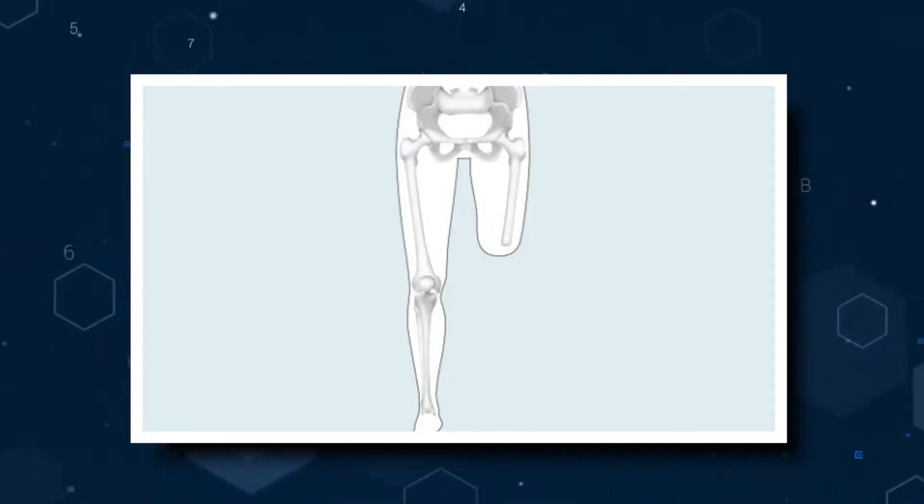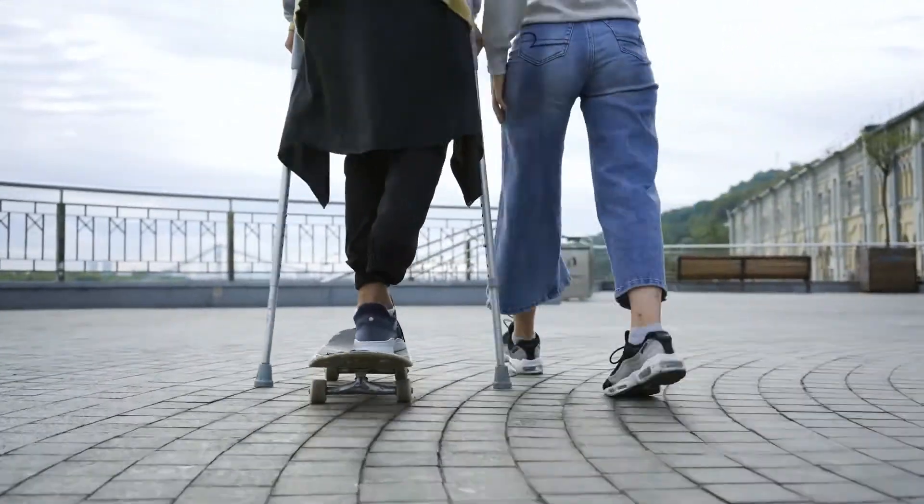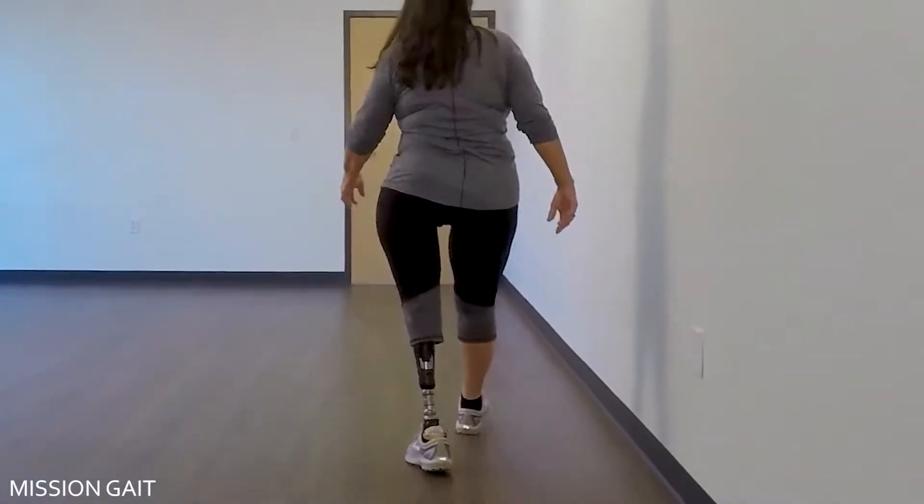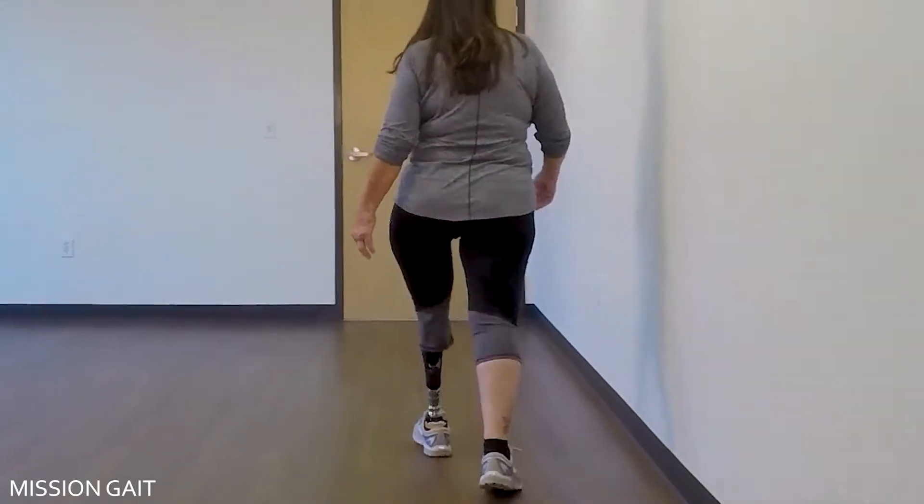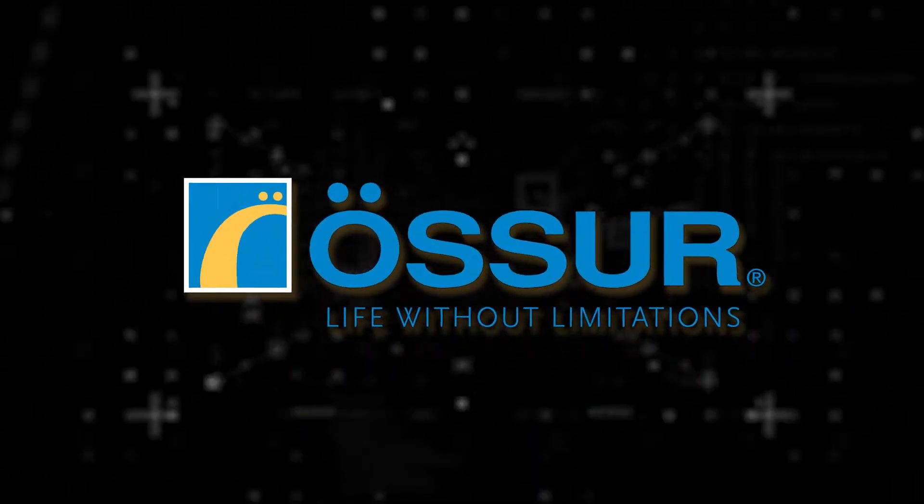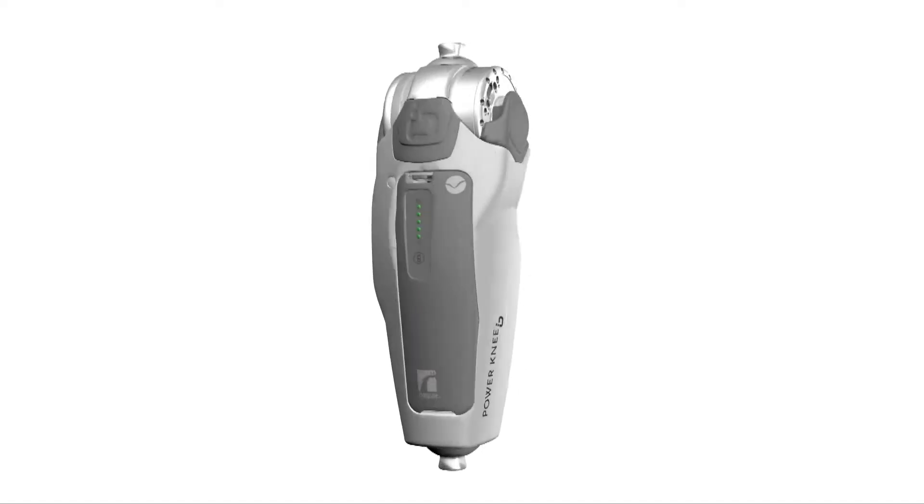Number 9. Power Knee. For people who had to undergo above-knee amputations, using traditional prosthetics can be difficult. You'd be adapting to a whole different way of walking without assistance from the knee. But Ulcer came in with a solution, a bionic knee called the Power Knee.